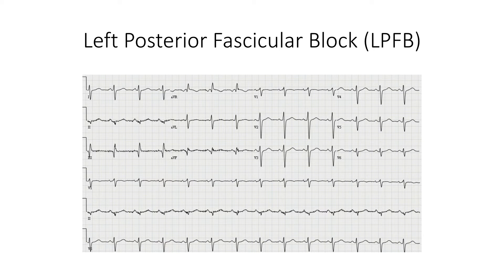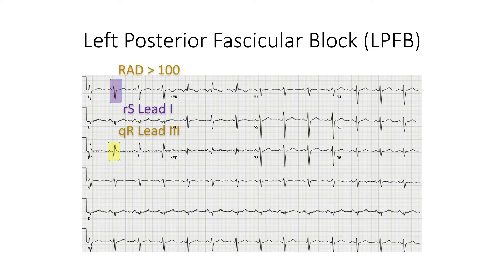Our next example is left posterior fascicular block. First, notice that we have an opposite appearance in the limb leads from the last ECG. This time, we have a small R and deep S wave in lead 1, and a small Q and a large R wave in leads 3 and foot. Our axis has shifted over to the right with a greater than 100 degree angle. A defining characteristic is the unusually tall R wave seen in leads V1 through V3 with a prolonged QRS, though the QRS duration is not yet longer than 120 ms or 3 small boxes. Taken together, we have left posterior fascicular block in this ECG.